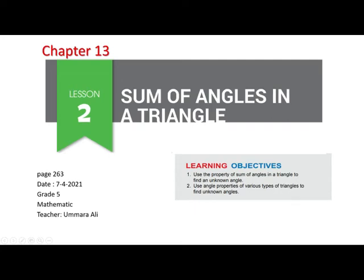Asalaam alaikum grade 5. Today we are continuing chapter number 13. We will do lesson number 2, which is the sum of angles in a triangle. Our target is to learn that the sum of angles in a triangle is equal to 180 degrees, and how to find an unknown angle. You will use angle properties of various types of angles to find unknown angles. The page number we are doing today is page number 263.